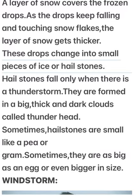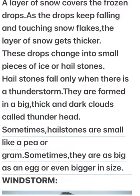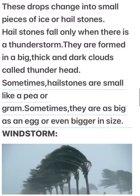Hailstones fall only when there is a thunderstorm. They are formed in big, thick and dark clouds called thunderhead. Sometimes hailstones are small like a pea or gram. Sometimes they are as big as an egg or even bigger in size.